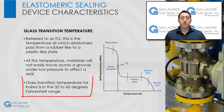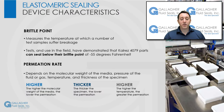Brittle point essentially measures the temperature at which a number of test samples suffer breakage. This is an indicator but does not necessarily measure the lowest temperature at which the elastomer can be used. Tests and use in the field have demonstrated that CalRez 4079 parts can seal below their brittle point of negative 55 degrees Fahrenheit. Permeation rate depends on the molecular weight of the media, pressure of the fluid or gas, temperature, and thickness of the specimen. The higher the molecular weight of the media, the lower the permeation. The thicker the specimen, the lower the permeation. The higher the temperature, the greater the permeation.